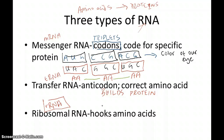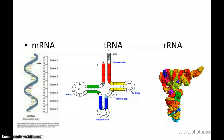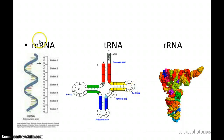As for their appearances: mRNA looks like a simple strand of code because it codes for a protein. tRNA looks clover-shaped because it brings forth anticodons and must find what amino acid to bring to the mRNA. rRNA looks like a bundle of molecules that makes bonds between amino acids.